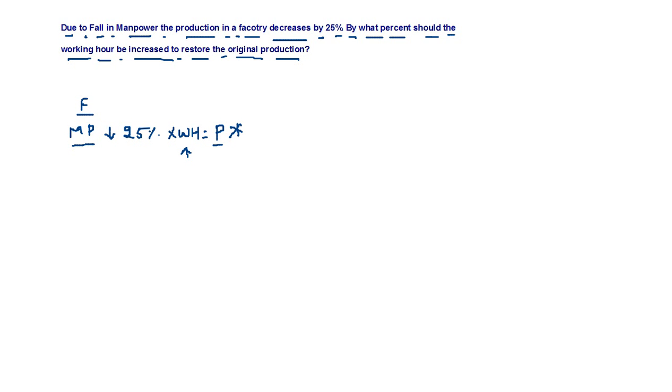To solve this problem we can assume that initially there are 100 men and they work for 100 hours. So this is the manpower initially and this is the working hours initially.